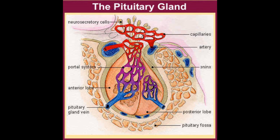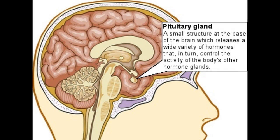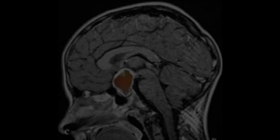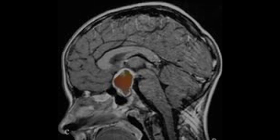The pituitary gland produces hormones that regulate other glands in the body. Pituitary gland tumors are mostly benign and don't spread to other regions. They are mainly found in young or middle-aged adults. Pituitary tumors are either secreting or non-secreting. Secreting tumors release too much of the pituitary hormones, and there are multiple types such as prolactin secreting, growth hormone secreting, TSH secreting, and ACTH secreting tumors. Pituitary tumors account for 5.9% of all tumors.